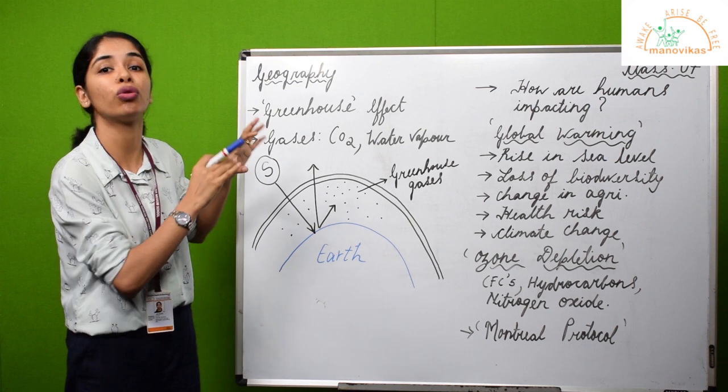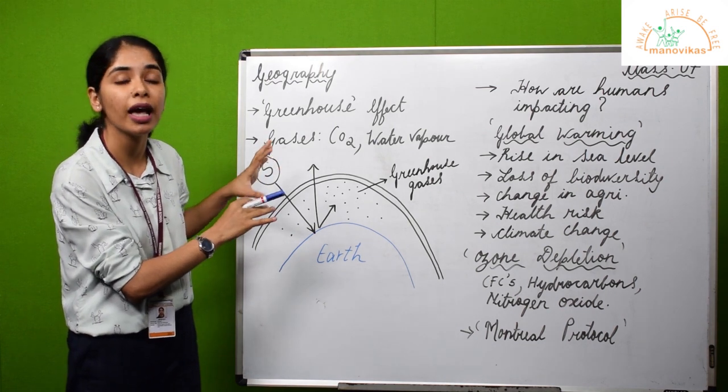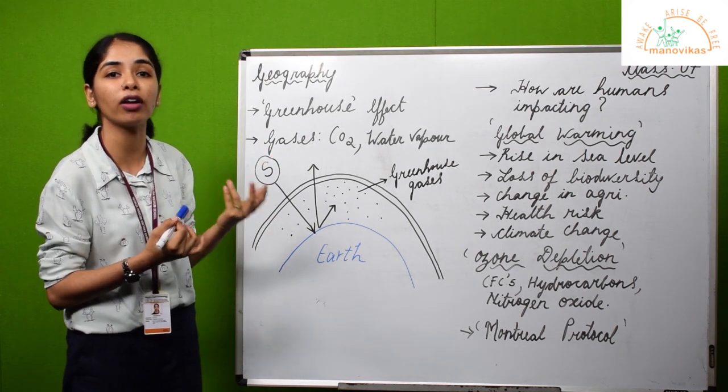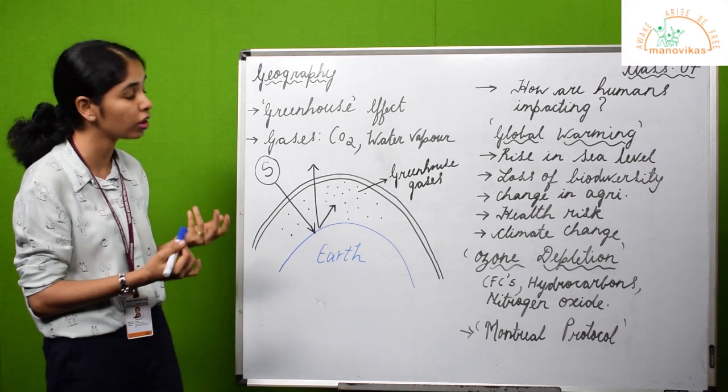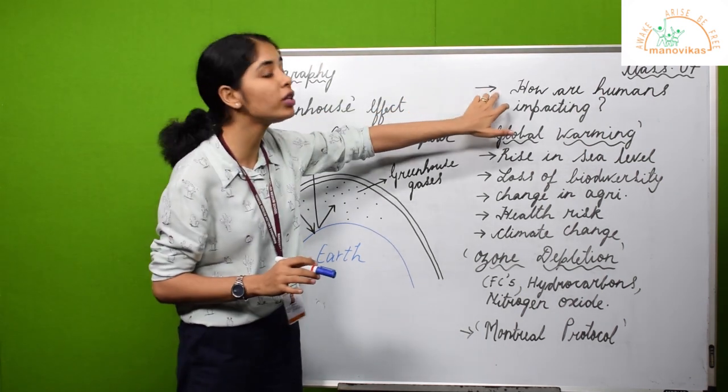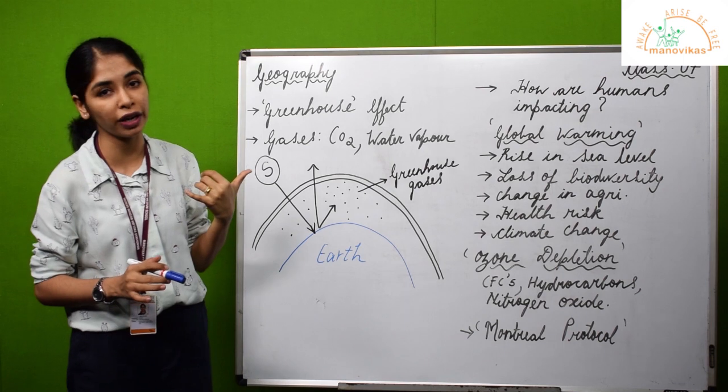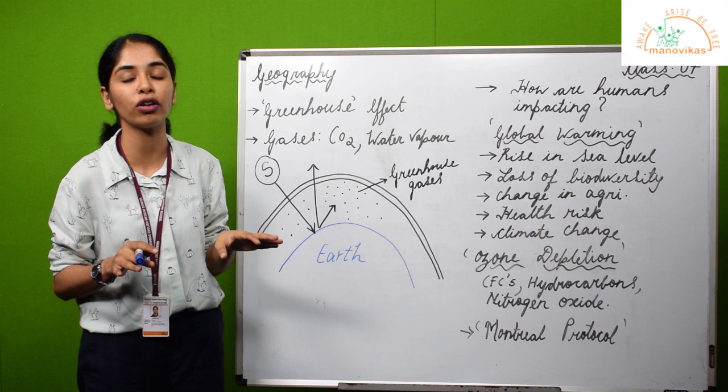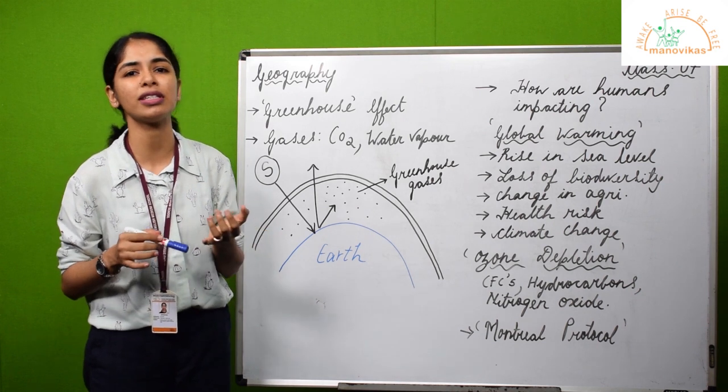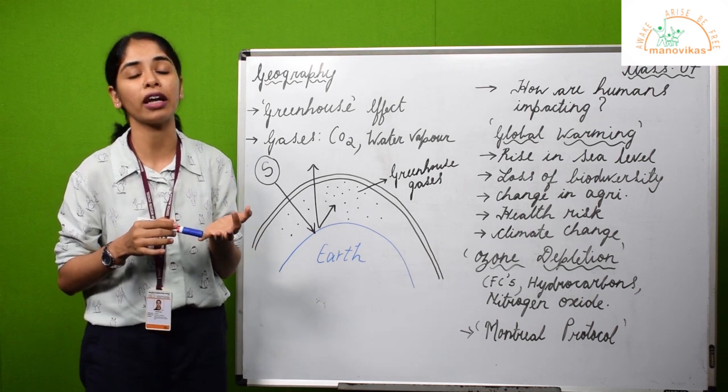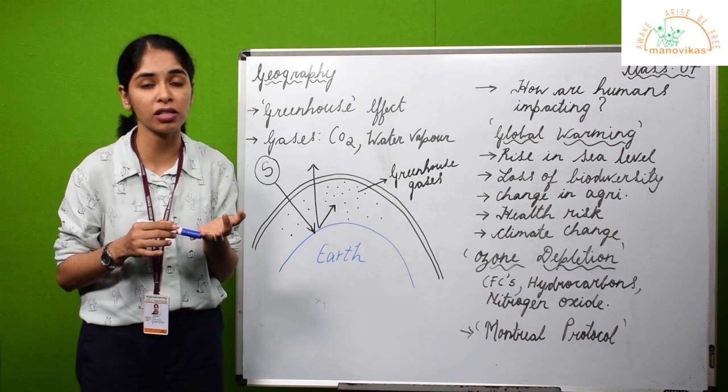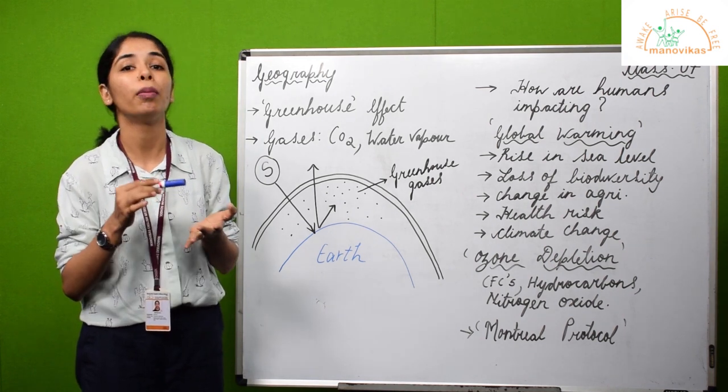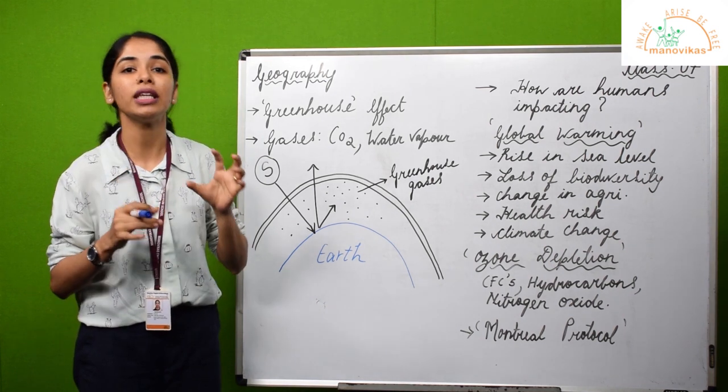Greenhouse effect is a good thing and it has a great positive impact on the atmosphere of the earth. Now, how are humans impacting this greenhouse effect? Human activities have completely destroyed the natural greenhouse effect of the earth by carrying out various activities like faulty agricultural and industrial practices, deforestation, and burning of fossil fuels.